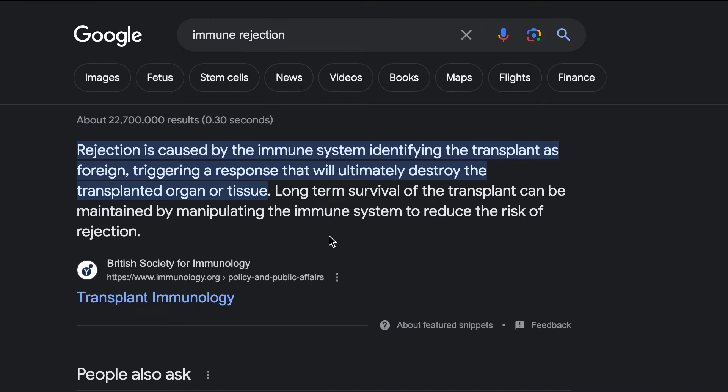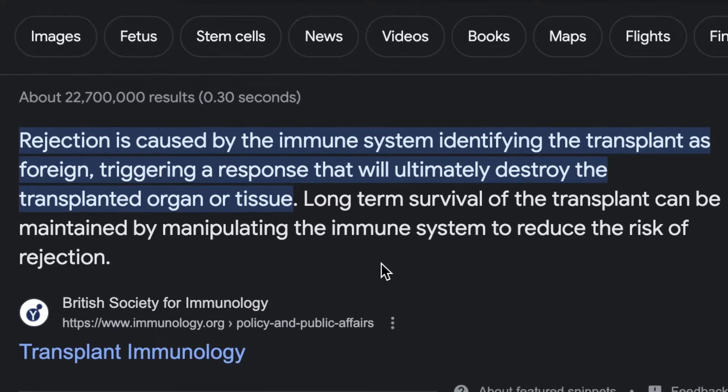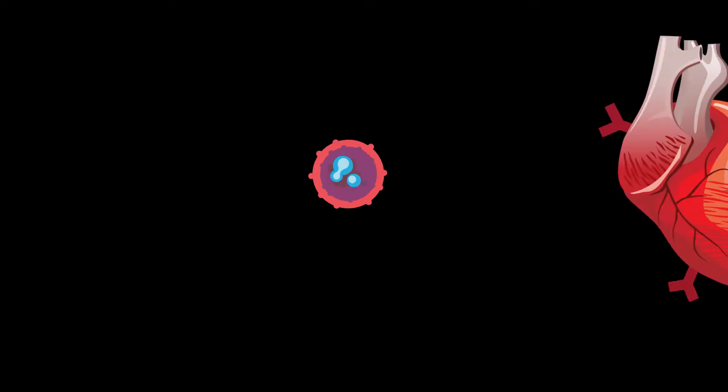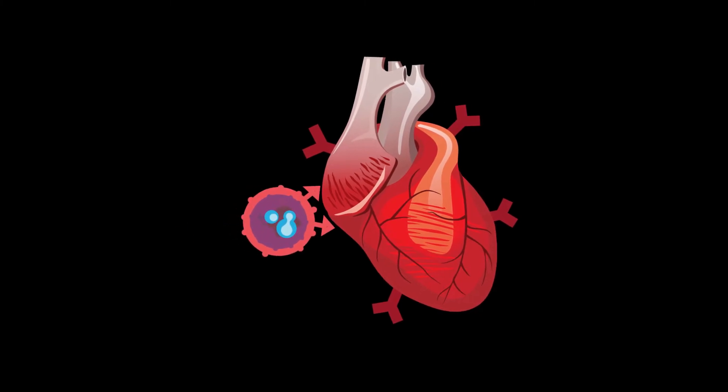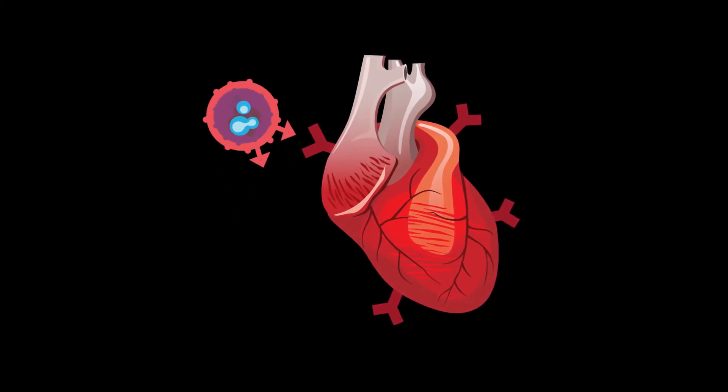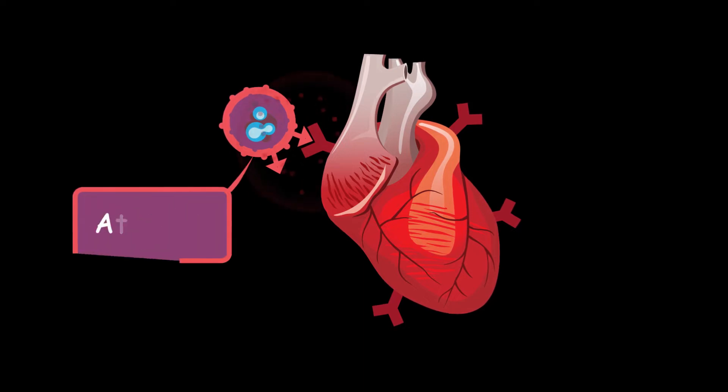Prior to this, organ transplant had very low success rates because of immune rejection. Our immune cells would recognize the difference between the host and recipient cells, and after transplantation, if the immune cells discovered the foreign cells, they would attack the transplanted organs.